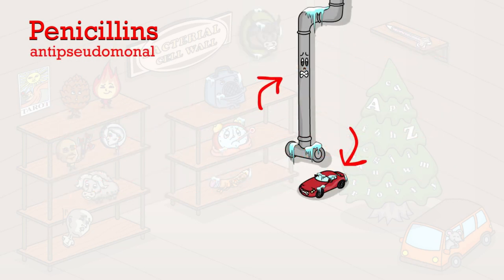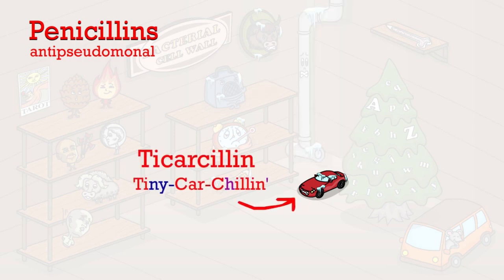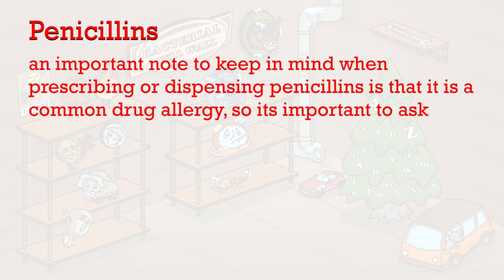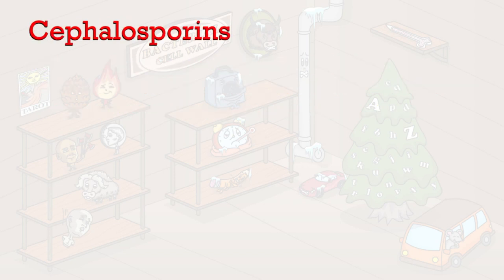There are two anti-pseudomonal penicillins in this picture. The tiny-car-chillin represents ticarcillin, and the pipe-chillin represents piperacillin. An important note to keep in mind when prescribing or dispensing penicillins is that it is a common drug allergy, so it's important to ask.